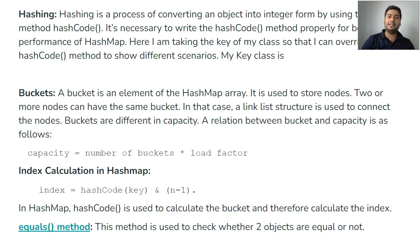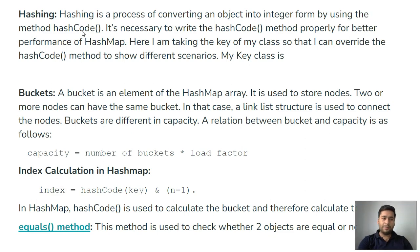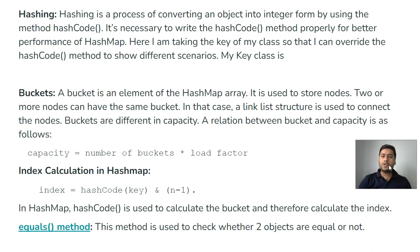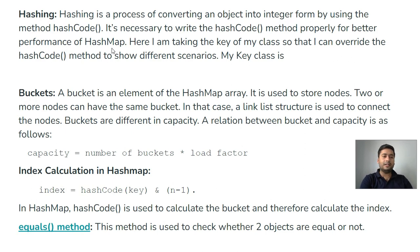Hashing is a process of converting an object into integer form by using the hashCode method. It is necessary to write the hashCode method properly for better performance. By default, a hash code is generated internally, but we can generate our own hash code for improving the time complexity of our HashMap implementation.